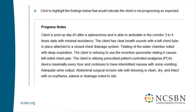The sixth and final item: 'Click to highlight the findings below that would indicate the client is not progressing as expected.' The way this works: click something and it highlights; click again and it unhighlights. The test taker doesn't spend mental energy deciding exact wording — we have pre-programmed the responses. If they click any part of a correct or incorrect response, they get the whole thing highlighted. They just need the basic concept.